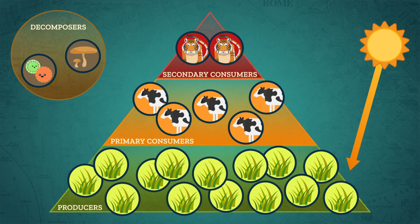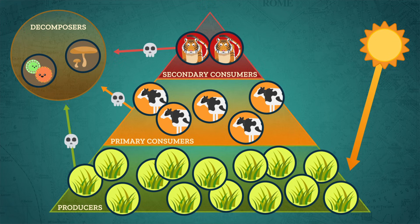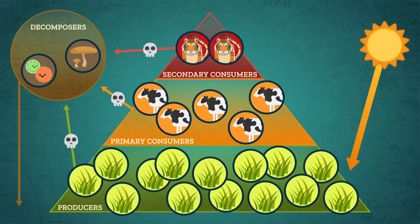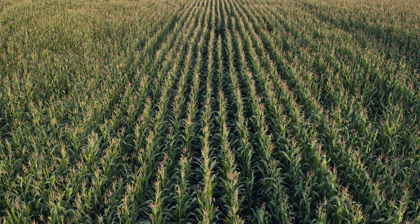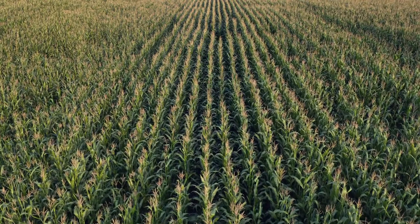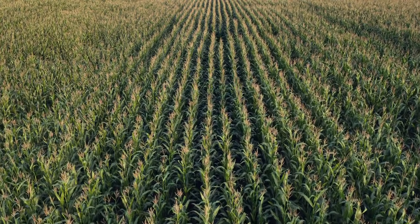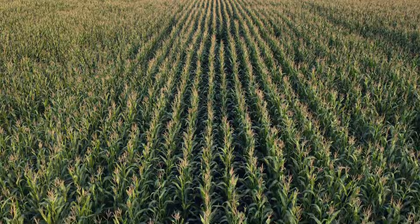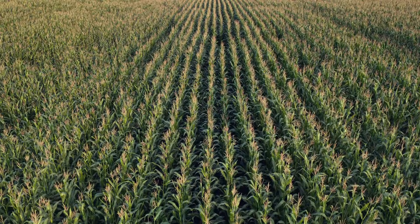And lastly, sitting at the edges are the decomposers, the cleanup crew who break down dead plants and animals, like our tiger, into energy and nutrients that mix into the soil for plants to absorb, starting the chain all over again. Thanks Thought Bubble.